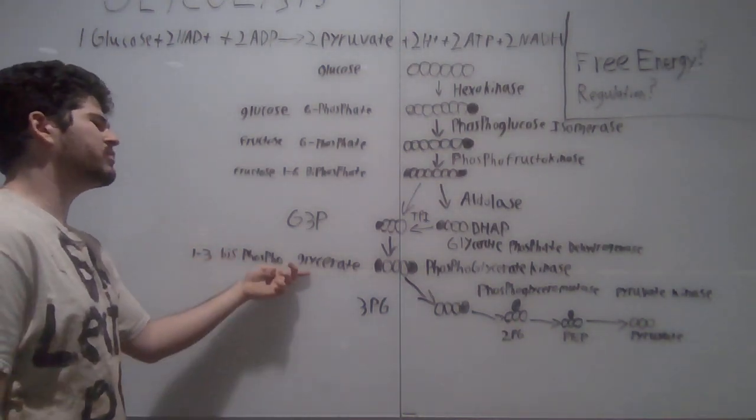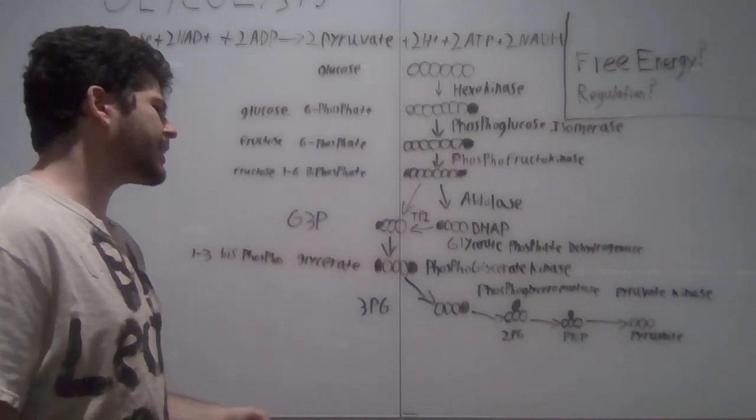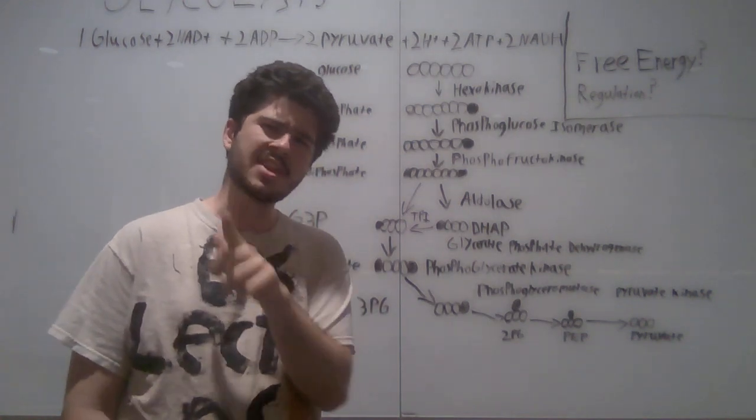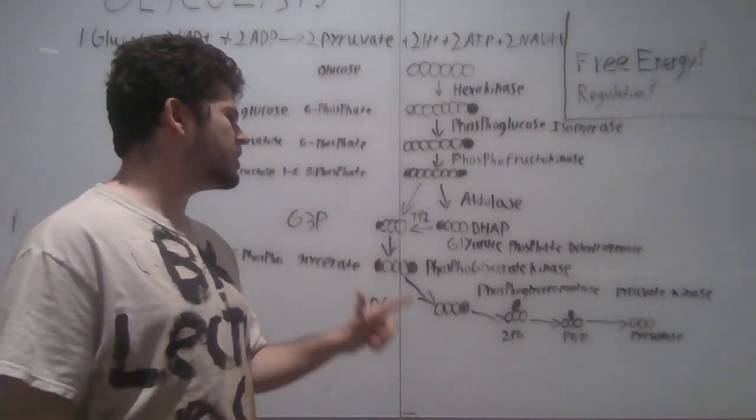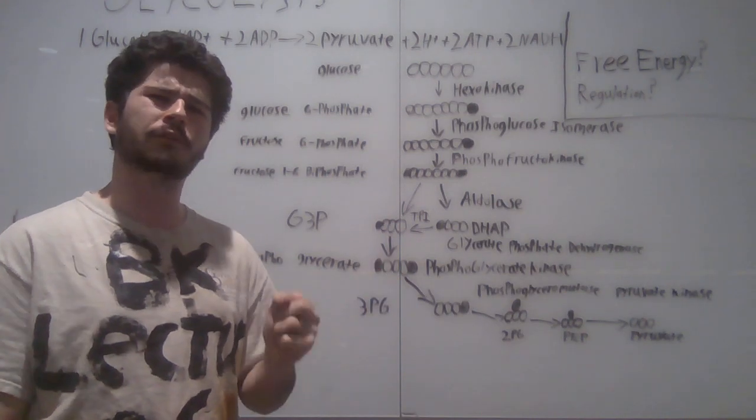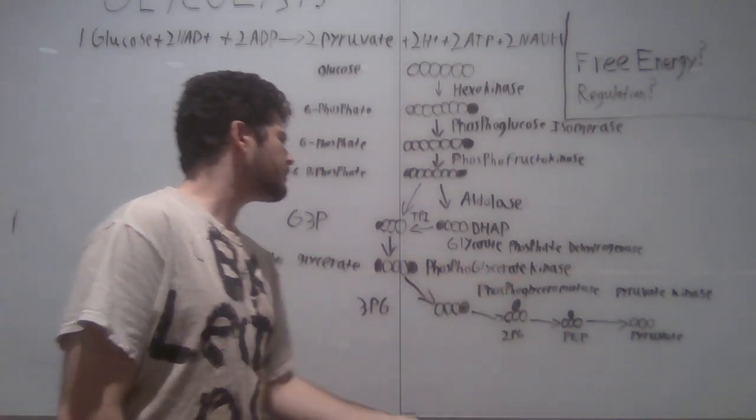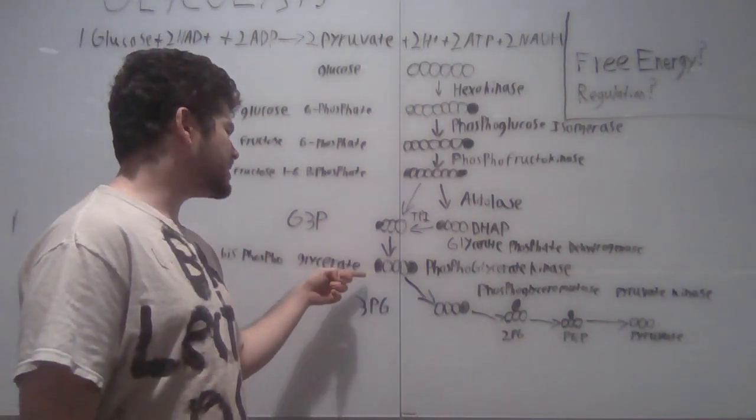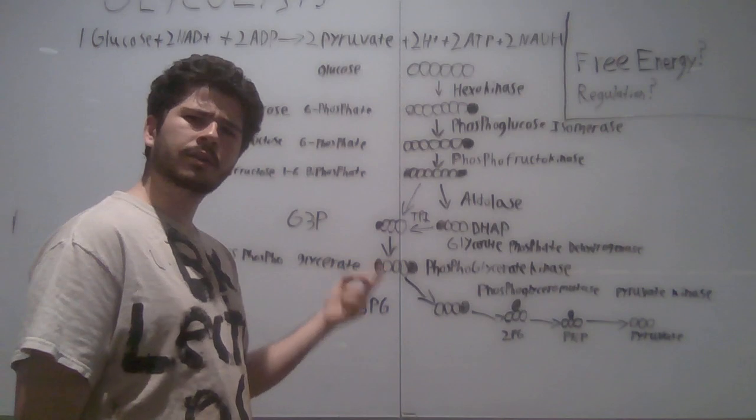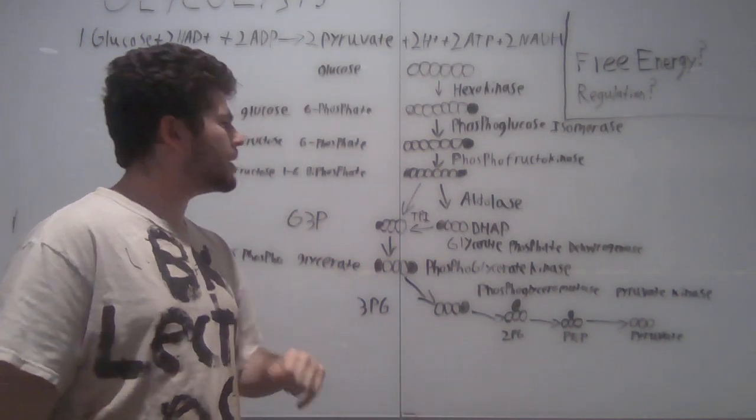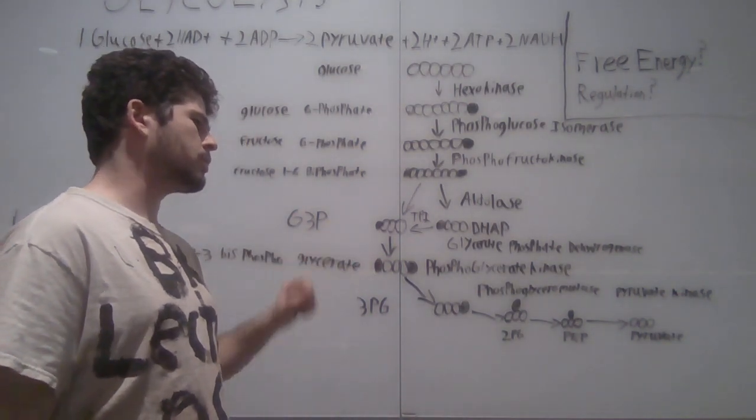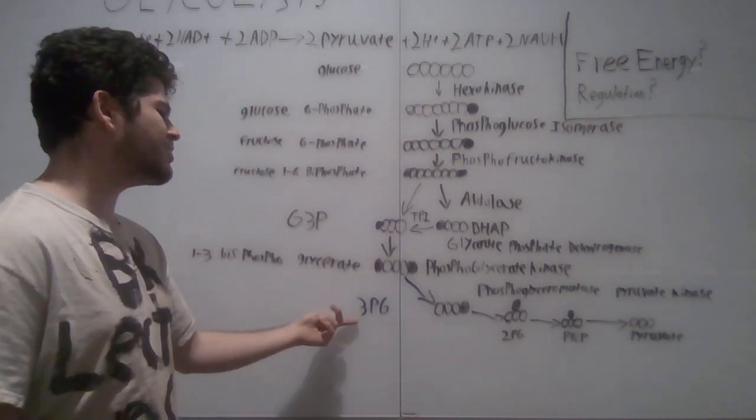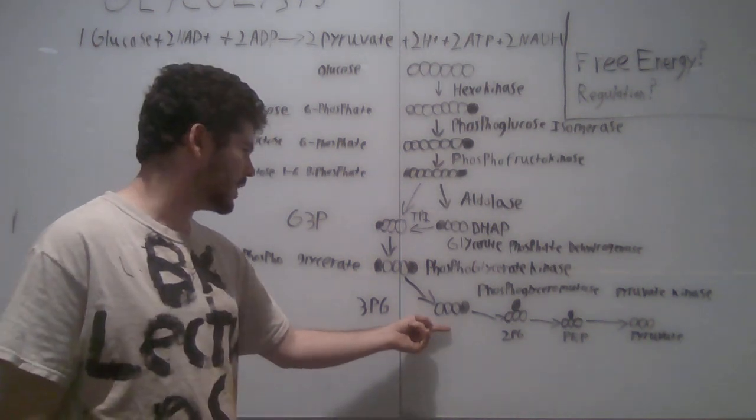1,3-bisphosphoglycerate undergoes another reaction, phosphoglycerate kinase. Now this is a kinase, which means it's going to be adding or subtracting a phosphate group from phosphoglycerate. We can see it does. Thus, it takes away a phospho group forming 2-ATP based on the two molecules undergoing this reaction. It transfers that into 3-PG, this molecule here.